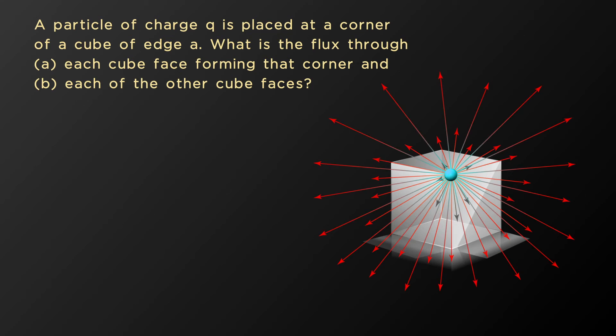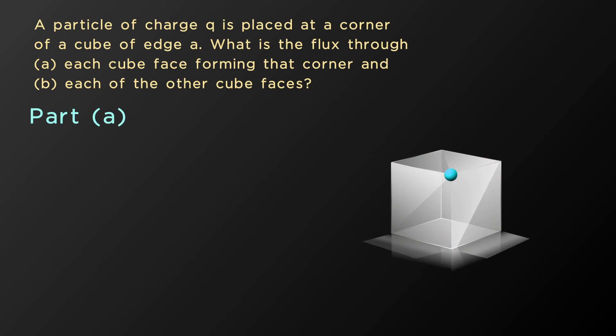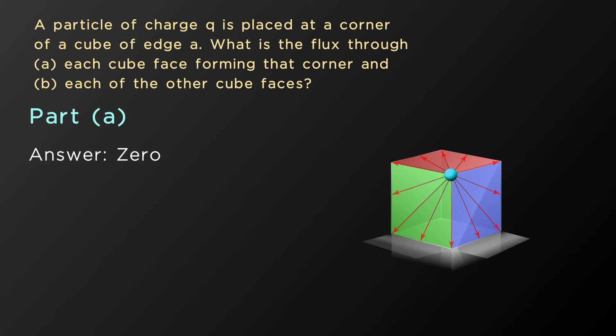If the charge is positive, the direction of the electric field will be away from the charge. In part A, we find the electric flux at the cube faces containing the corner where the charge is placed. There are three such faces. The electric field at these faces is along the plane of the faces, meaning it is perpendicular to the area vector. Hence, the electric flux at each cube face forming this corner is zero.